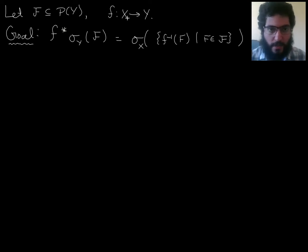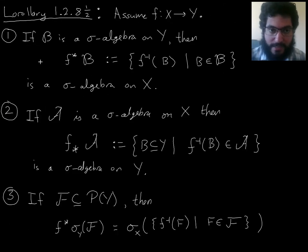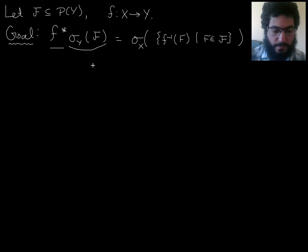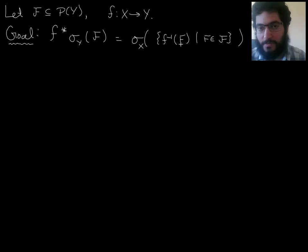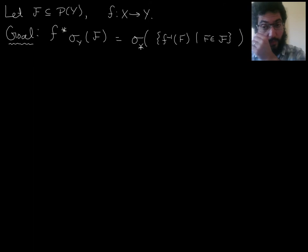So here's our setup. We've got our function f from x to y, any old function, and a collection of subsets of y. We have two objects that we're comparing. One is: first take your collection f and generate a sigma algebra of y, then pull that back to get a sigma algebra of x. We know that does give us a sigma algebra of x, thanks to part one — pulling back a sigma algebra gives us a sigma algebra. The other is: first pull back these elements of script f, then generate your sigma algebra as a sigma algebra on x. We want to show that those are the same.